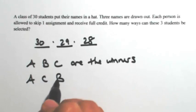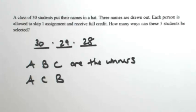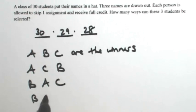Another way could be A, C, and B. They're still the winners. Let me put B first: B, A, C. Then B, C, A. You still have the same winners.